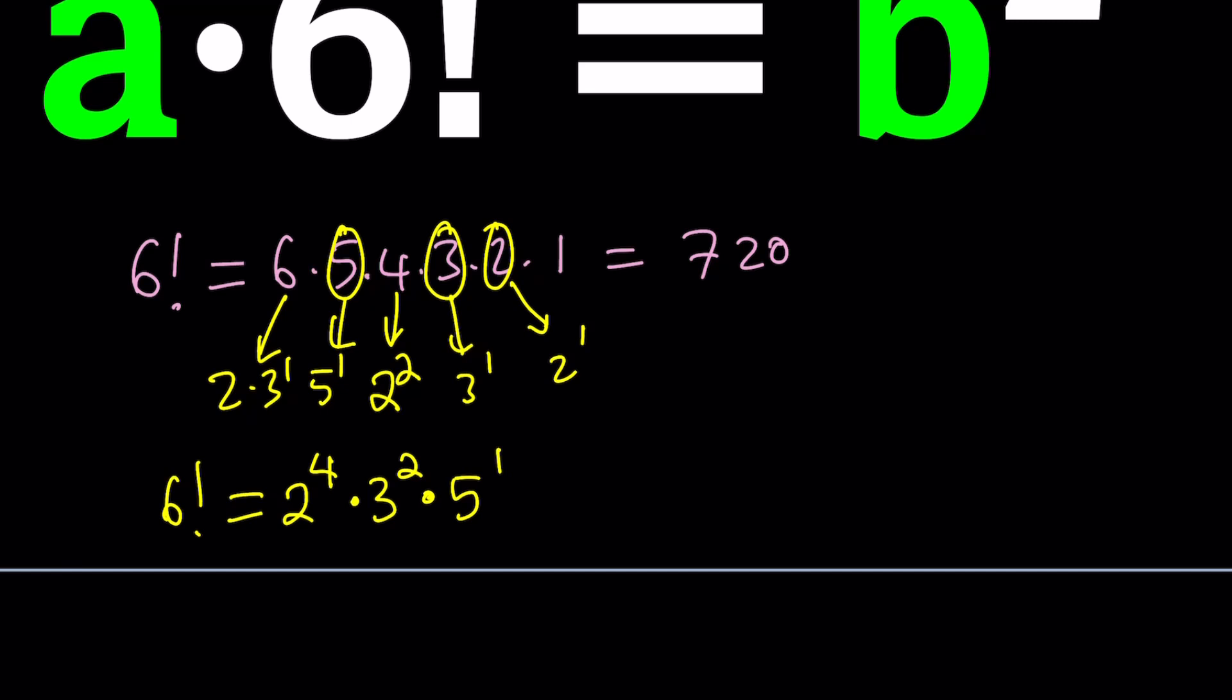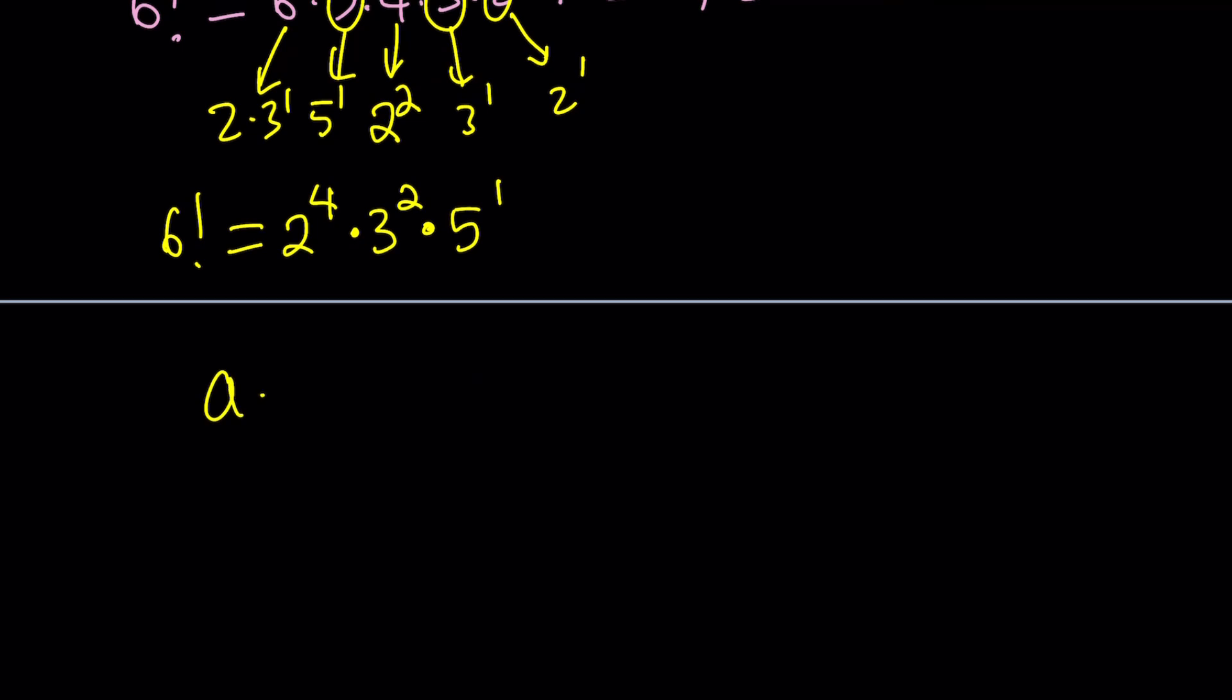So that's the prime factorization. What am I going to do with that? Plug it into my equation. So a times 6 factorial will be replaced with 2 to the 4th, 3 to the 2nd, and 5 to the 1st. And remember, this is equal to b squared.